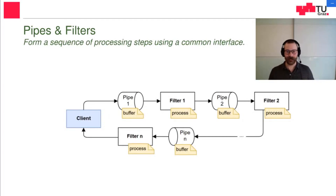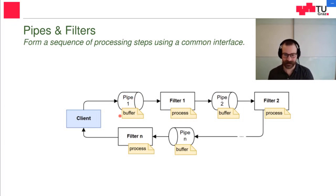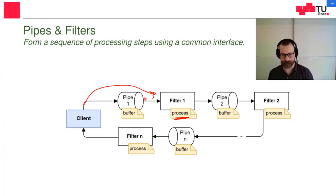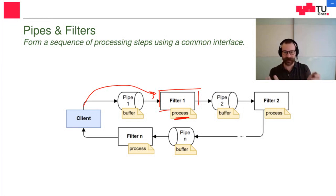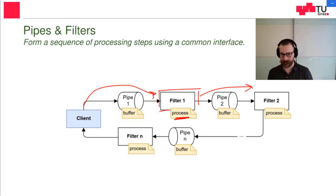Pipes and filters is the next pattern we want to form a sequence of processing steps using a common interface. As you can see in the graphic, we have pipes which are basically just buffers — they get some data from the client, buffer it in between, and communicate it forward to the first filter, which is basically just a process. We get a data request through a pipe, the first process does something with this data — it processes it, think of sorting or filtering the first 20 bytes of each file and reading it — then it outputs the data using a pipe for the next process.